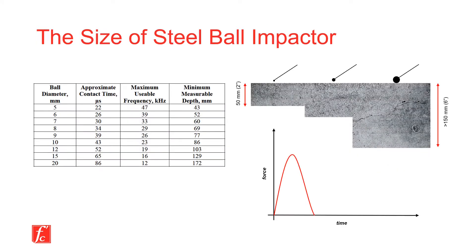Different impactors should be used for different concrete thicknesses. For example, a small diameter ball impactor is ideal for investigating thin concrete elements. In contrast, a larger diameter will be necessary for thick concrete elements.